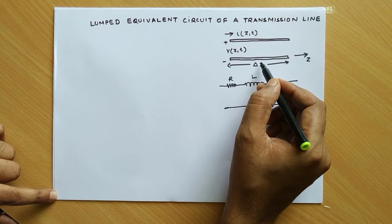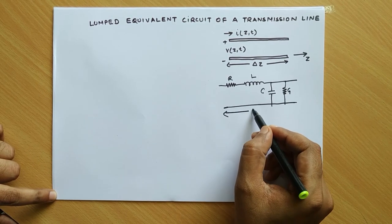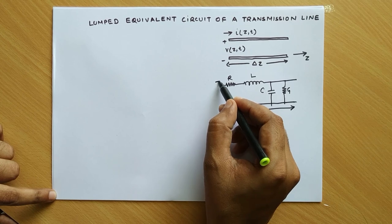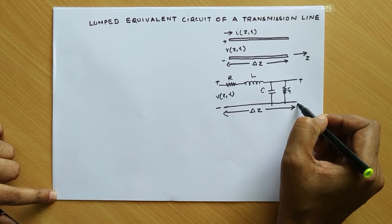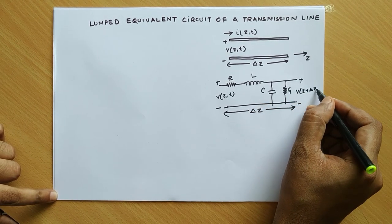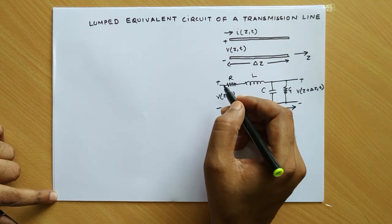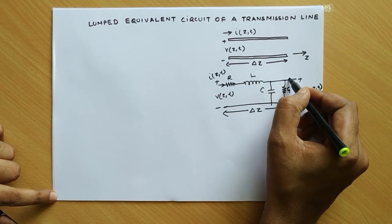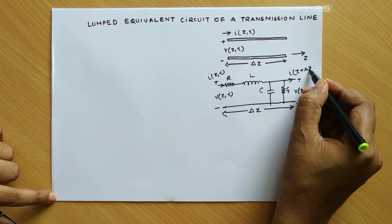Let us consider the length of the line as shown in the figure as delta Z. The input voltage is V(Z,T), so the output voltage at the other side will be V(Z + delta Z, T). Similarly, the current entering into the resistor is I(Z,T) and the current leaving the second port will be I(Z + delta Z, T).